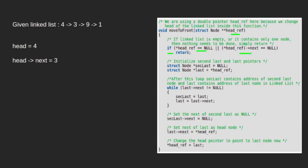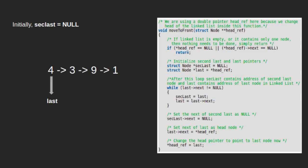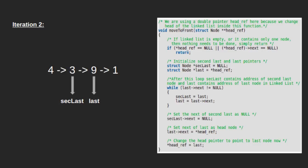Two pointers sec_last and last are declared. Sec_last is initialized with null and last points to 4. After the first iteration, last will point to 3 and sec_last will point to 4. After the second iteration, last will point to 9 and sec_last will point to 3. After the third iteration, last will point to 1. Since the next of last is null, we stop traversing. So we get second last node pointing to 9 and last node pointing to 1.